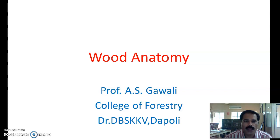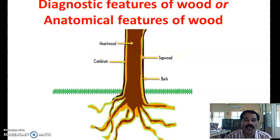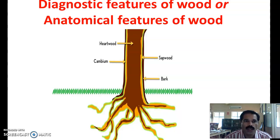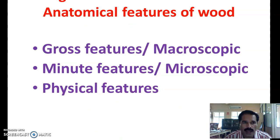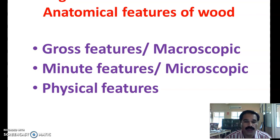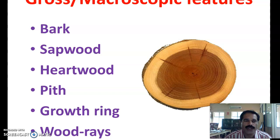Wood anatomy means the study of the internal structure of the wood — the anatomical features of wood. The features are either gross features, also known as macroscopic, minor features also known as microscopic, and physical features of wood. So for identification of wood, these three features are very important.